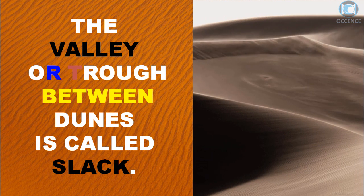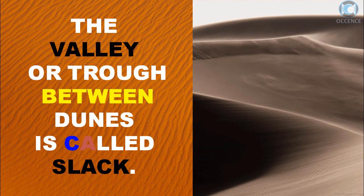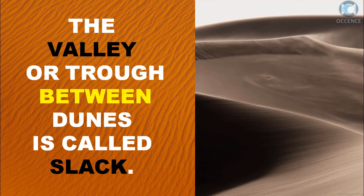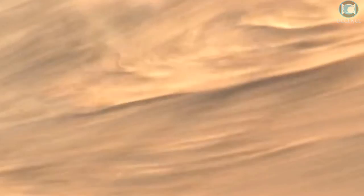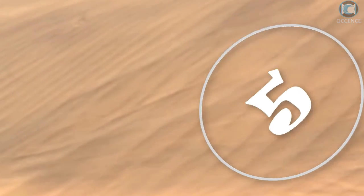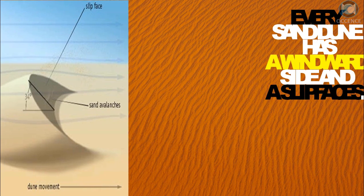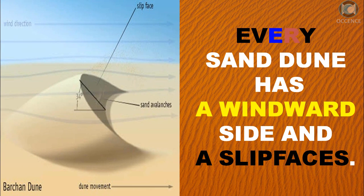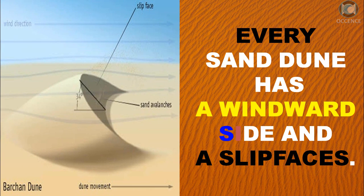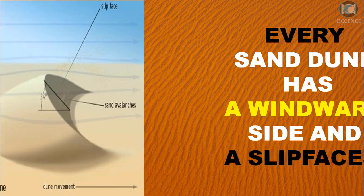The valley, or trough, between dunes is called slack. Every sand dune has a windward side and a slip face.